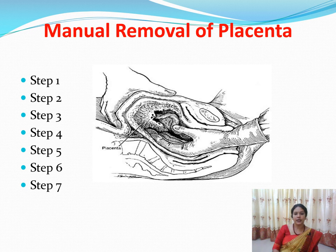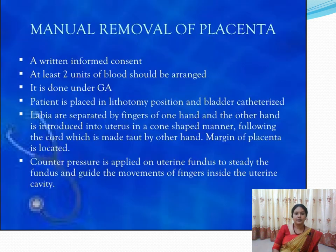Manual removal of the placenta involves seven steps. First, obtain written informed consent from the patient and arrange at least two units of blood. The procedure is performed under general anesthesia. Place the patient in the lithotomy position, catheterize and empty the bladder, and separate the labia with the fingers of one hand.